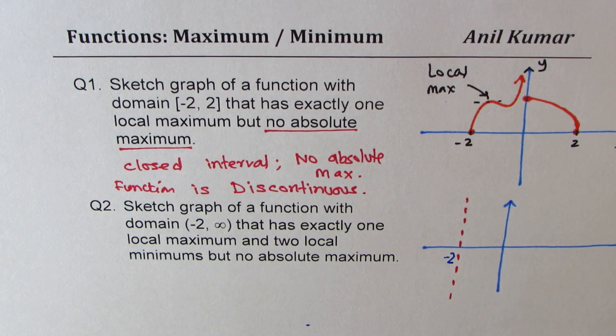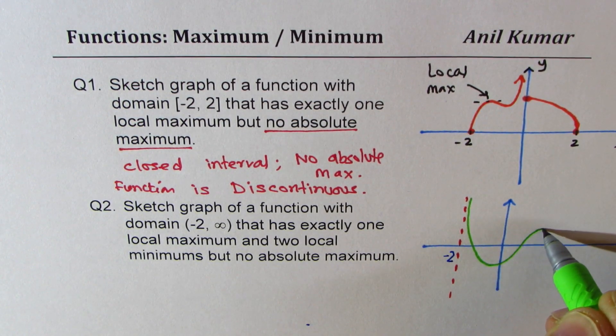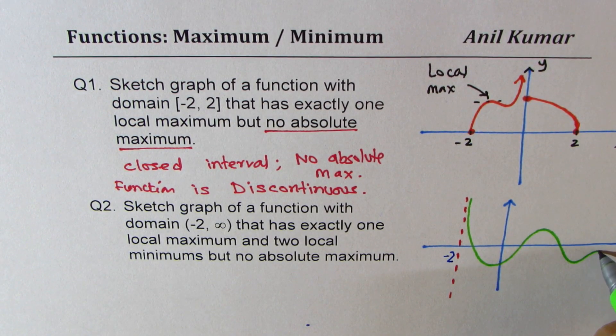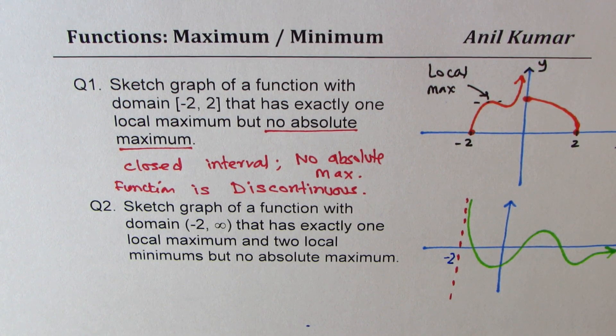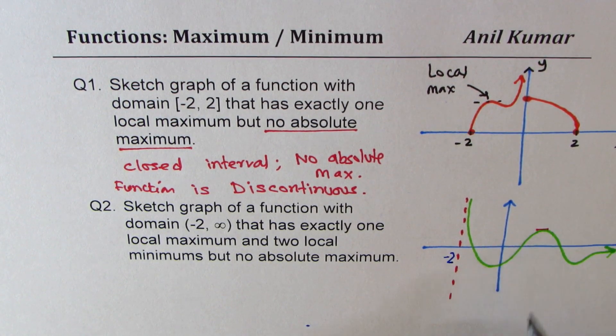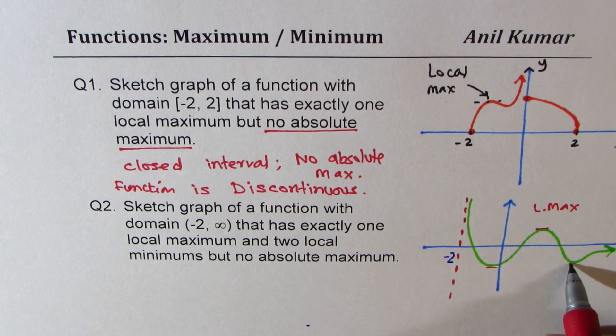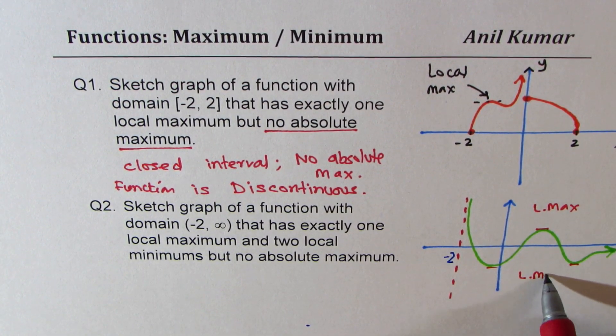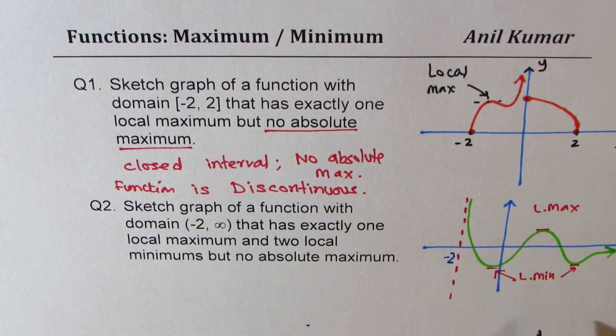So we could sketch a graph kind of like this. Do you see that? So in this particular graph we do have one maximum, local maximum, and these are the two local minimums. So that is how you could actually sketch these functions.